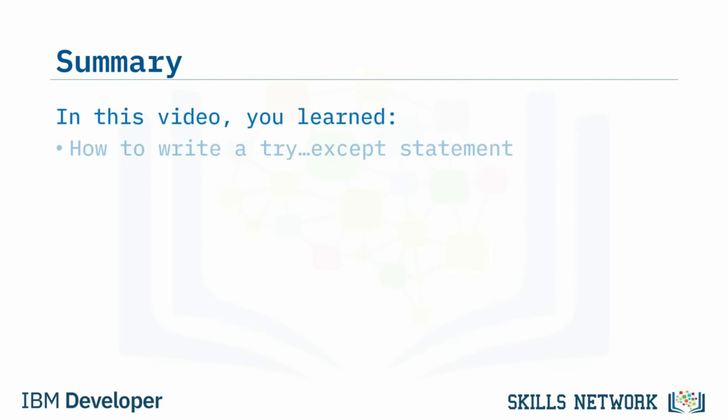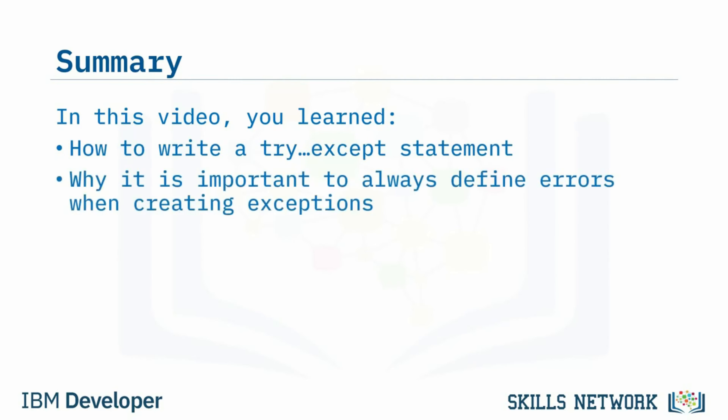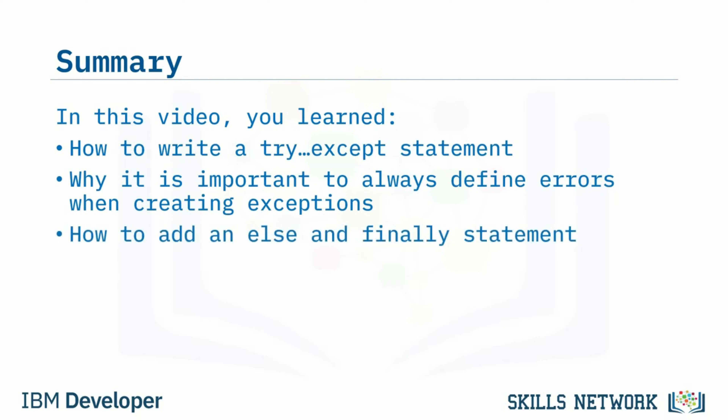Since we are opening a file, the last thing we need to do is close it. By adding a finally statement, it will tell the program to close the file no matter the end result, and print 'file is now closed' to the console. In this video, you learned how to write a try/except statement, why it is important to always define errors when creating exceptions, and how to add an else and finally statement.